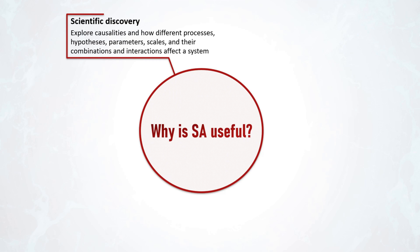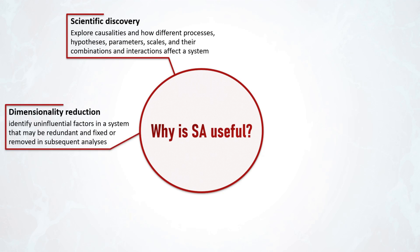Sensitivity analysis can augment our perceptual understanding of how a system works, allow us to run hypothesis testing, and diagnose how a model of a system might be deficient so we can improve model fidelity. Another purpose could be dimensionality reduction by identifying non-influential factors in a system that may be redundant and can be fixed or removed in subsequent analysis. This can simplify a problem at hand and make it more tractable and cheaper to solve both computationally and conceptually.